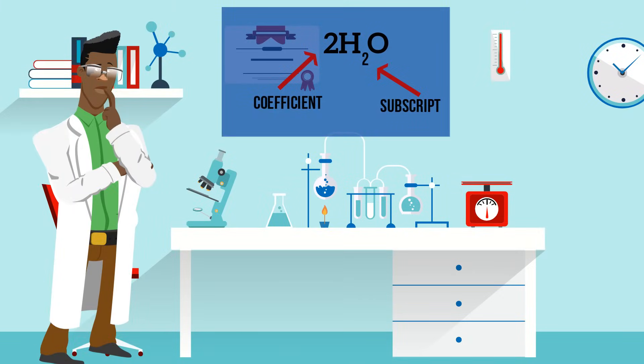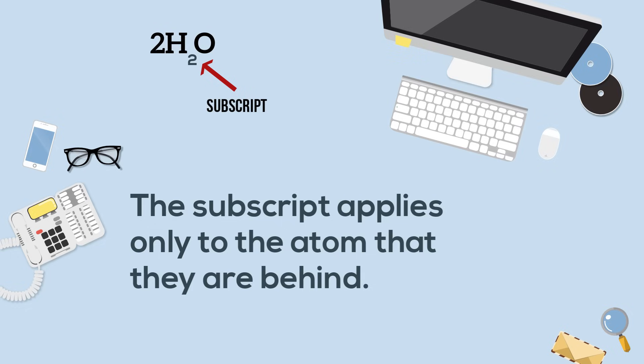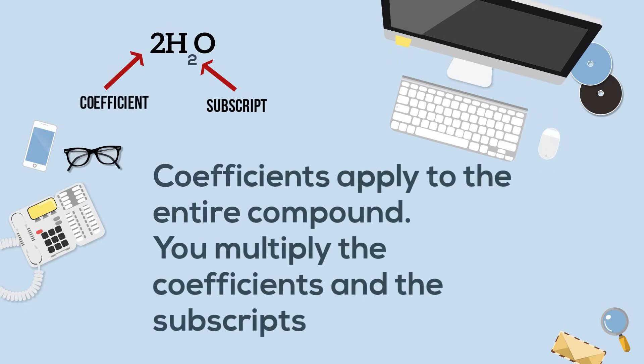You may notice that it has a subscript. The subscript applies only to the atom that they are behind. A coefficient applies to the actual compound, and you multiply the coefficients and the subscripts.